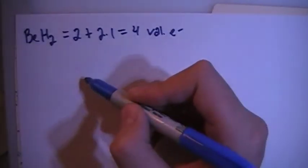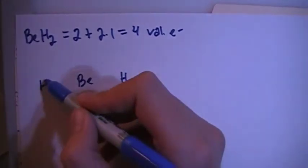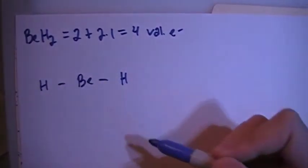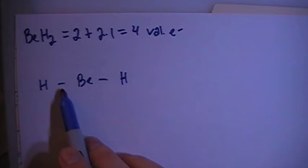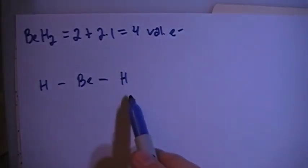We know that hydrogens can only have a single bond, so in this case the beryllium has got to be the central atom. So we have the beryllium in the middle, hydrogen on the right, hydrogen on the left, and just a single bond for each one. Two electrons, four electrons, that's our total number of electrons. This should be the structure.